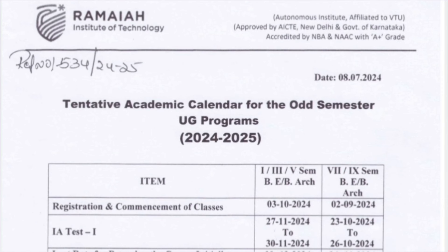You can see there are different line item activities mentioned. The first column is for semesters like first, third, and fifth semester, so I will only look at the first column. The second column covers seventh and ninth semester which is for B.Arc. The first column is what we should take for B.E first semester. Registration and commencement of classes will start from 3rd of October in Ramaiah — it is starting one week later than BMSIT, which is 3rd of October 2024.